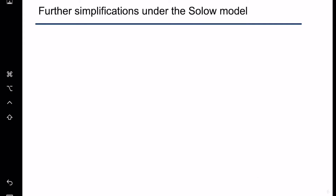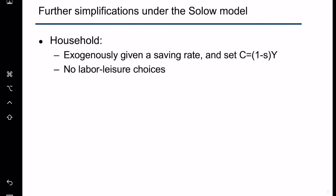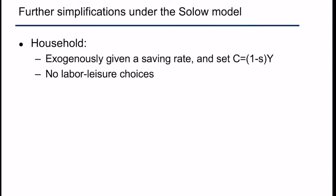Now that we know the basic components of a macro model, let's look at the Solow model. Because the Solow model is a very simple version of a macro model, we make many more simplifying assumptions. For the household, we do not assume utility maximization for consumption and saving choices. Instead, under the Solow model, the household is exogenously given a saving rate. Consumption is set as a fraction of output, where S̃ is the saving rate — a given parameter.